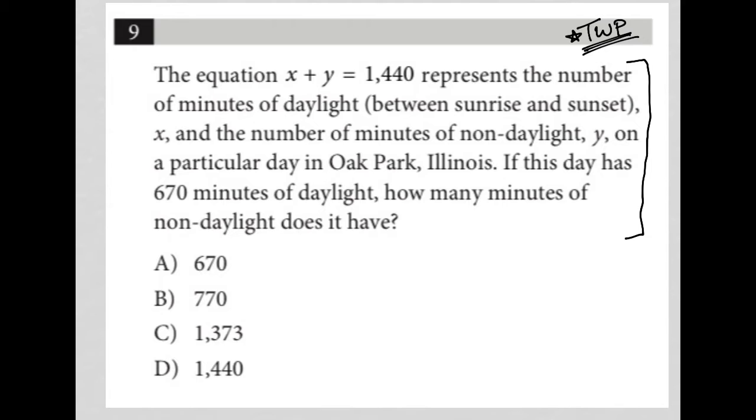So the first sentence here says the equation x plus y equals 1440, which I'm going to just rewrite because I like to do that, represents the number of minutes of daylight between sunrise and sunset.